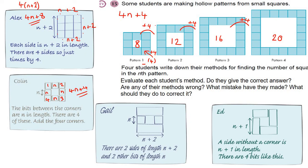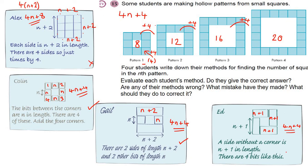Gail says opposite sides are the same — two sides are n + 2 and two sides are n, giving 4n + 4. Gail is correct. Ed says a side without a corner is n + 1, similar to Alex except he's only counted each corner once. So four sides give 4 lots of n, and four lots of 1 gives plus 4: 4n + 4. So the only wrong method is Alex's — he counted the corners twice. Well done to Colin, Gail, and Ed.